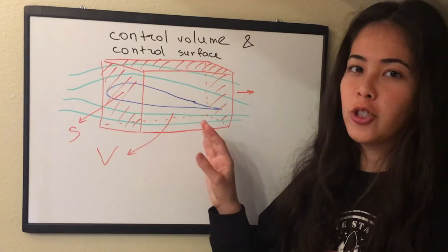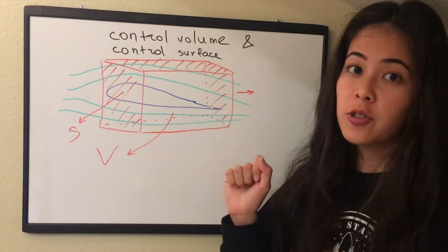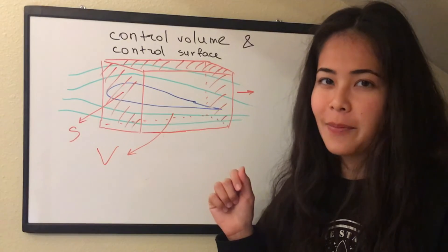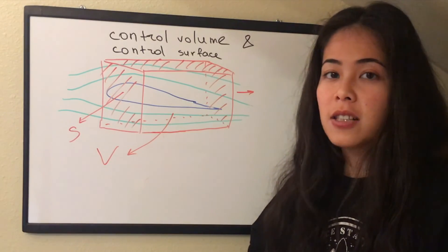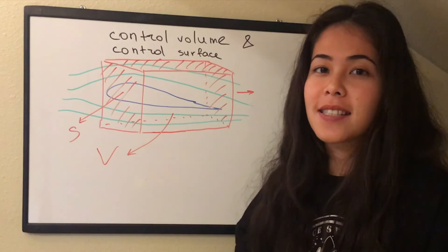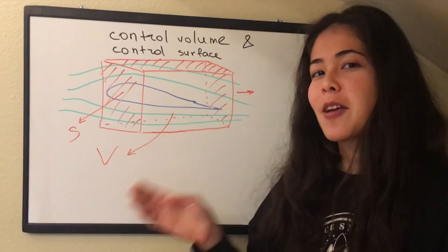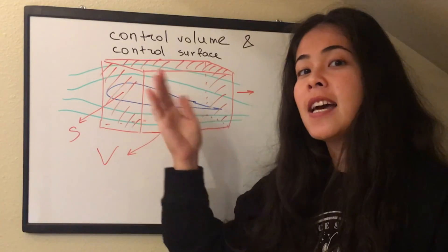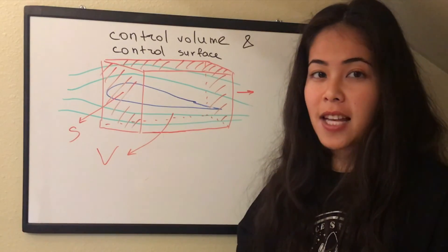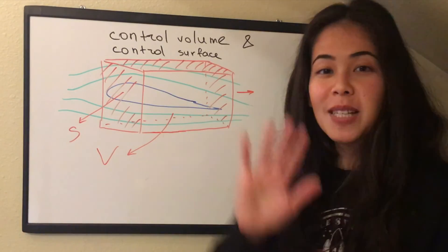So for now, this is all you need to know about the control volume and control surface. We will use this notion in the next video when we derive the principle of continuity, one of the most important laws in aerodynamics. If this is your first time on my channel and you missed any previous lessons, you can catch up here and here, where we characterize the wing and the properties of the airflow. Don't forget to subscribe to my channel to be notified when the next video comes out. See you next week!